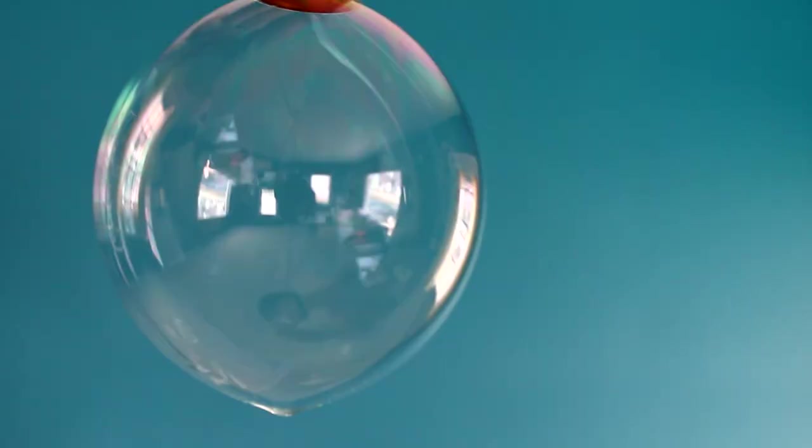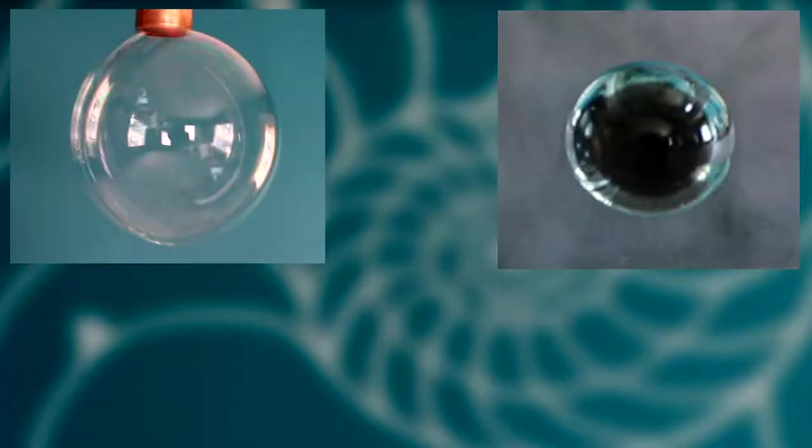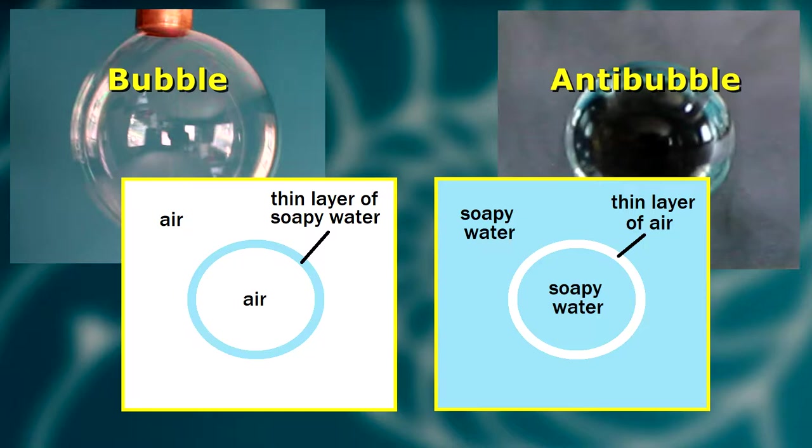A regular bubble is a thin membrane of soapy water. It has air on the interior of it and air on the exterior of it. Well, an anti-bubble is the exact opposite of that. It's a thin membrane of air that has soap water solution on the interior and on the exterior of it. And visually, they're a pretty awesome thing to observe.